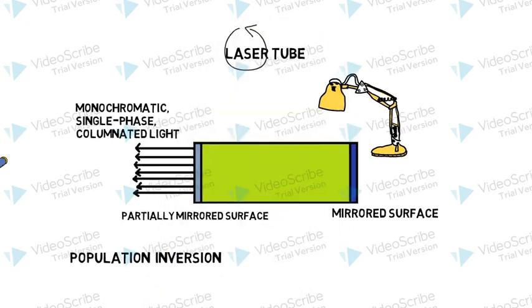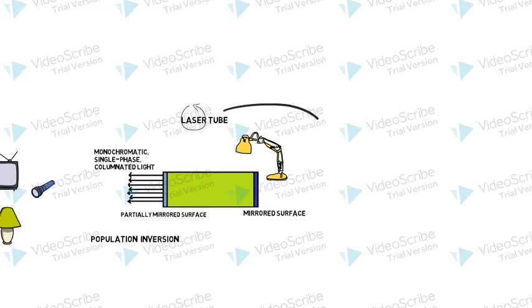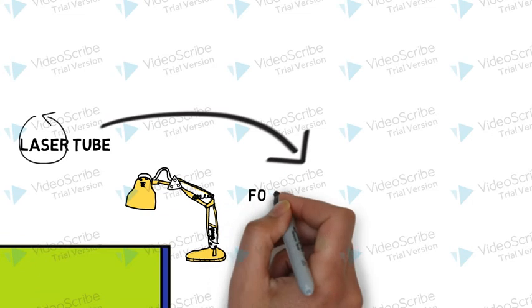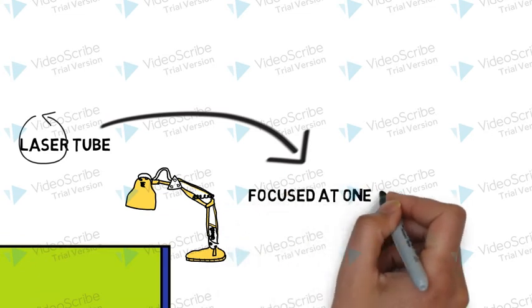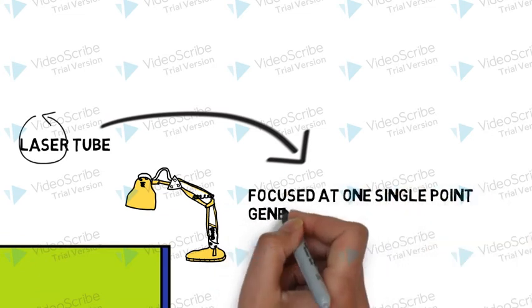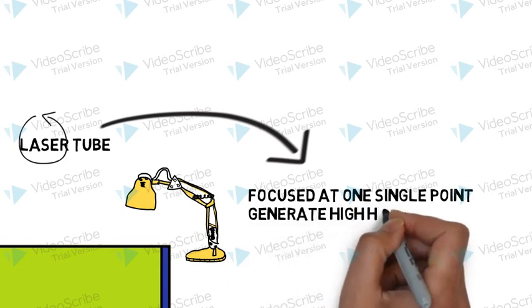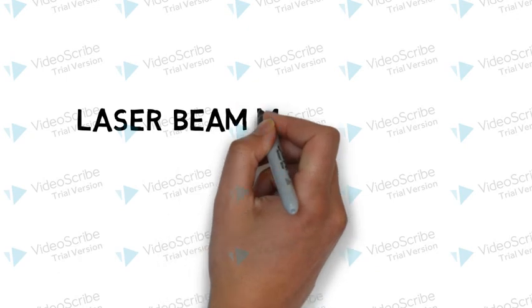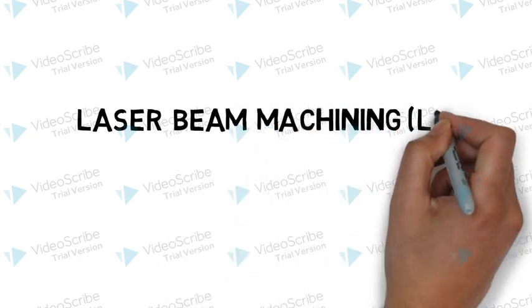This laser light is of high frequency and monochromatic energy. So when it is focused on one single point, it can generate high heat which can be used to evaporate or machine metals and other materials. Let us move to the laser beam machining equipment setup and working.